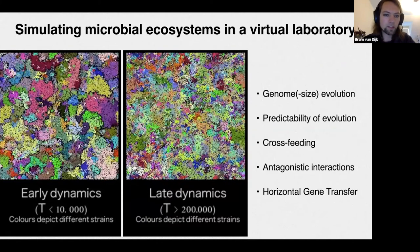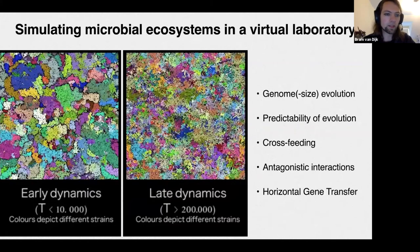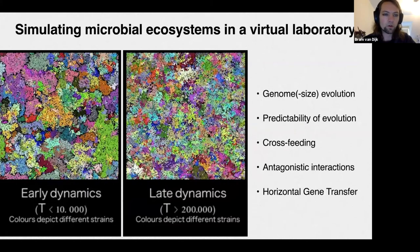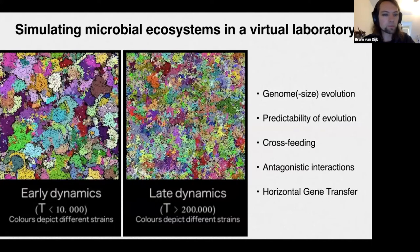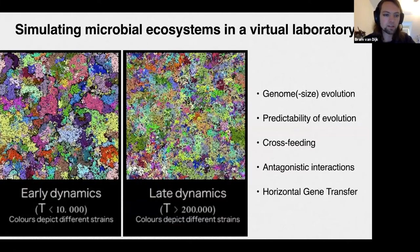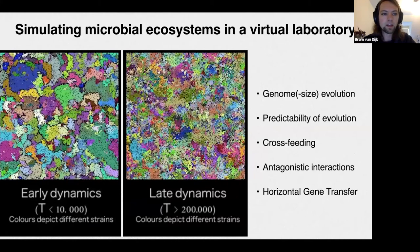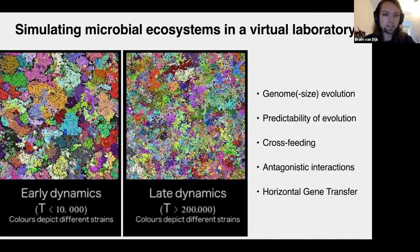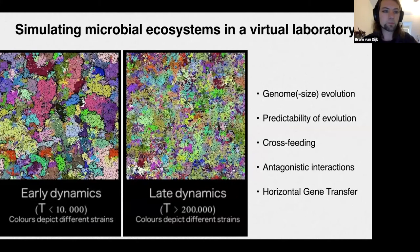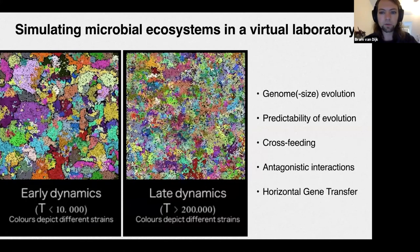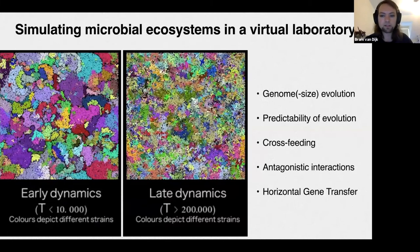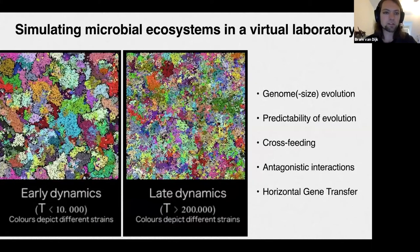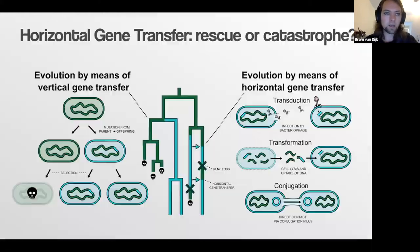On the left here, you see these movies of microbes that in this case are killing one another via toxin production — they can be resistant and you get all these interesting dynamics. I study things like genome size evolution, predictability of evolution, cross feeding, antagonistic interactions, and also horizontal gene transfer, which is the topic for today.